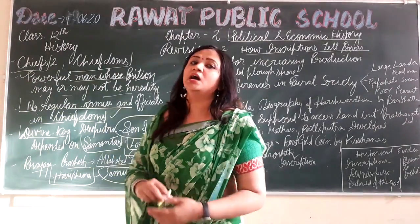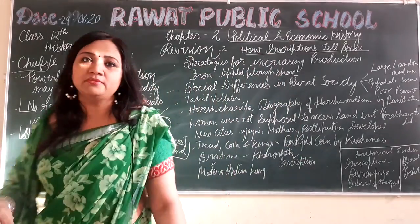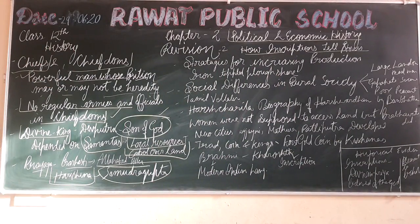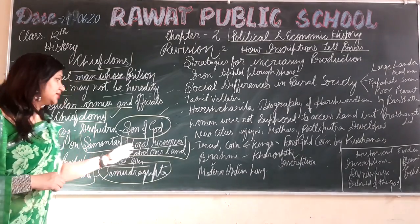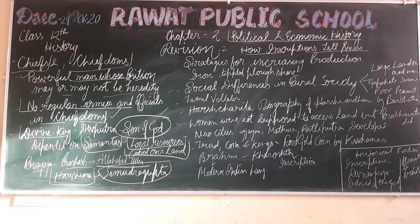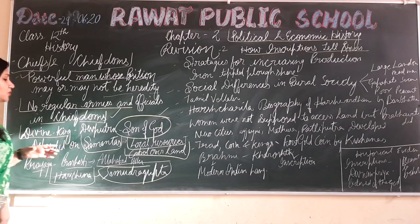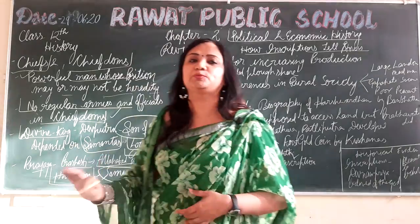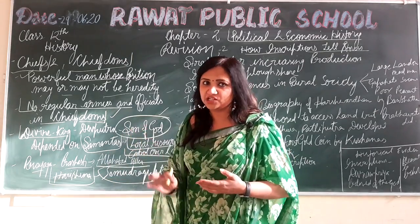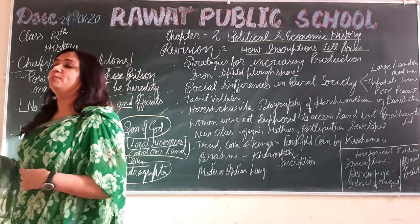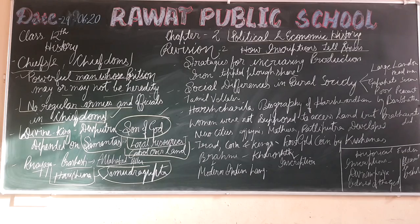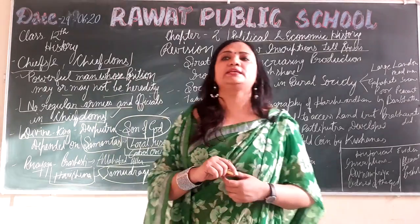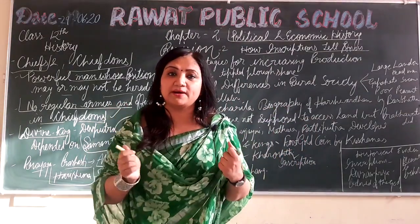Such types of questions can come in the exam. Now see what questions we can have: Who were the chiefs? Chiefs were powerful men whose position may or may not be hereditary. What is the meaning of Dev Putra? Dev Putra means son of god. Who wrote Prayag Prashasti? It was written by Harisena. Who was Harisena? He was the poet of Samudragupta. What is the present name of the Prayag Prashasti location? That is the Allahabad Pillar — on pillars, engravings and carvings tell us about people and features of that time.